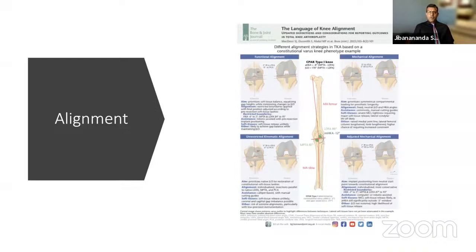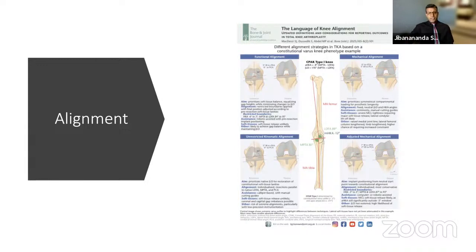Before considering total replacement, alignment is the first thing to address. Various strategies exist with newer techniques and concepts. This is a good article by McFadyen in the Bone and Joint Journal on coronal plane alignment and knee classifications. I typically use mechanical alignment, and have used adjusted mechanical alignment depending on deformities. At this time I am not into functional or unrestricted alignment — that's probably the future, but I need more data before I change my practice.